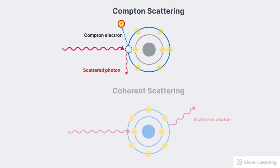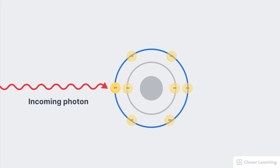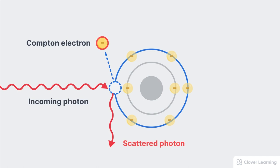Coherent scattering is also different. This occurs when the incident photon interacts with the entire atom. The energy of the photon is temporarily absorbed and then released as a scattered photon. There's no ionization, no free electron, and no biological harm to the patient. Occupational dose from coherent scattering is also negligible. Compton scattering occurs when the incoming photon interacts with an outer shell electron — this energy is absorbed by the electron, causing it to be knocked out of its orbit, and at the same time a scattered photon is also created.